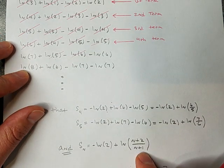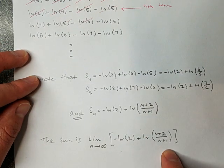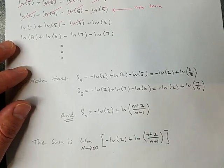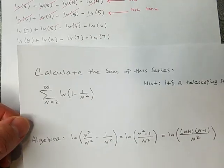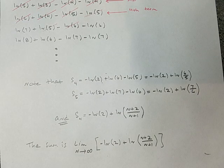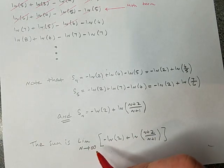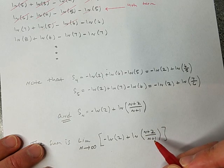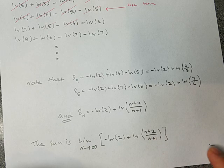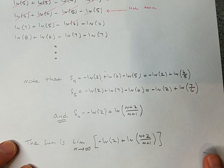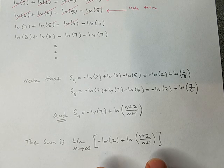Now I have a formula for the partial sum. The sum of the series is the limit as n goes to infinity of negative natural log 2 plus natural log of n plus 2 over n plus 1. I'll leave this last part up to you. All you have to do to find the sum of that original series is tell me what this limit is. If n goes to infinity, what does n plus 2 over n plus 1 go to, and then what's the logarithm of that number? That's your sum. If you get stuck and want some verification, let me know.